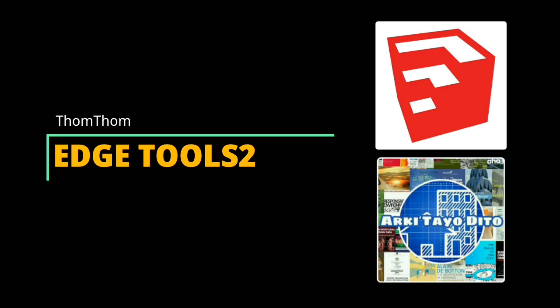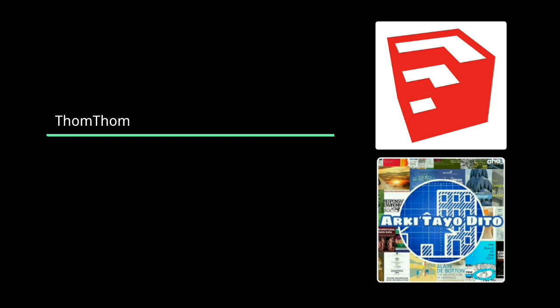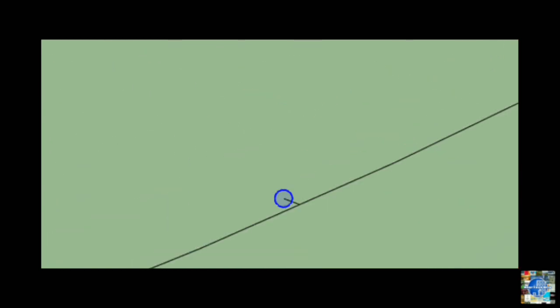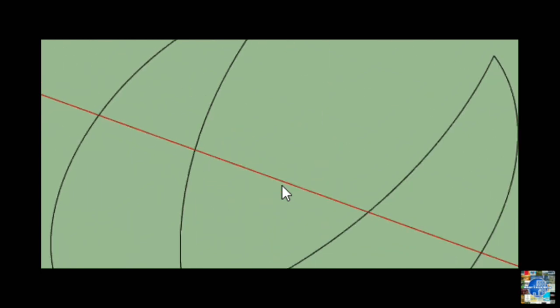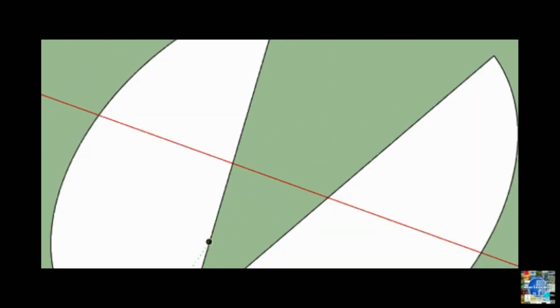Edge Tools 2 by TomTom. TomTom's handy palette of edge-related tools saves you time in multiple ways, enabling quick simplification of imported DWG site plans. The ability to split a face into multiple planes, and most significantly highlighting of imperfections, so you can clean up your model in a flash.